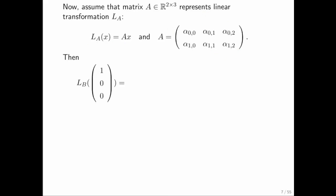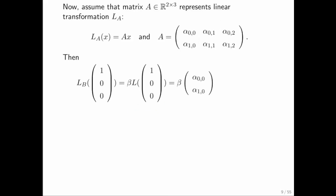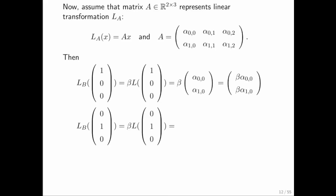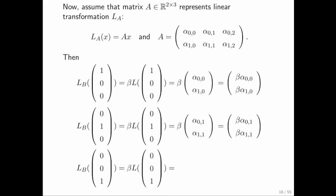We plug in the first unit basis vector into L sub B: we put it into L sub A, which evaluates to the first column of A, and then multiply by beta. Similarly, plugging in the second unit basis vector gives us the second column of A multiplied by beta. Plugging in the third unit basis vector gives us the third column of A multiplied by beta.